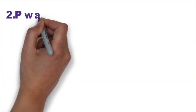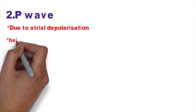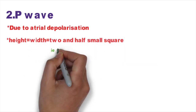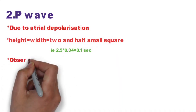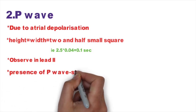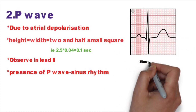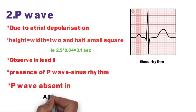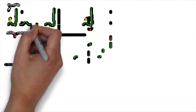Next, we examine the P wave. The P wave is due to atrial depolarization. Normally, the P wave is about 2.5 small squares in height and width, which equals 0.1 seconds. We observe the P wave in lead 2. If the P wave is present, it is simply a sinus rhythm. If the P wave is absent, it can be due to atrial fibrillation, where the P wave is replaced by a fibrillatory wave.